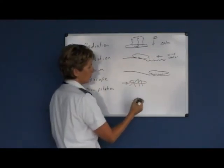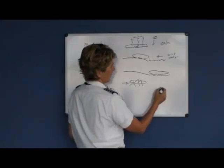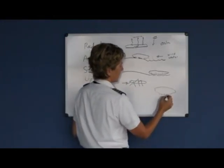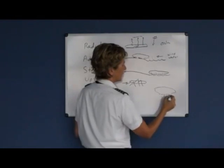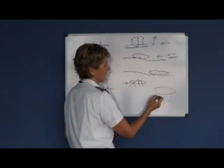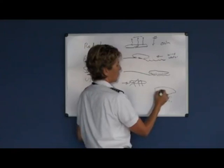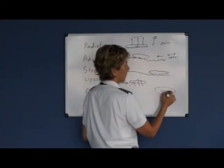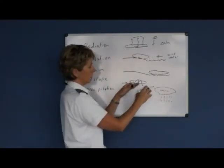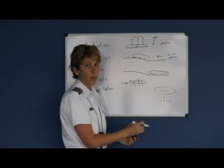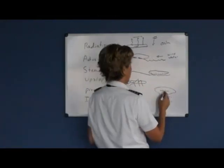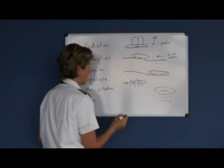Precipitation fog is where you had some rain and the rain fell through a different temperature below. You could have warm rain if a warm front was present, with warm air aloft that falls through colder temperatures below.